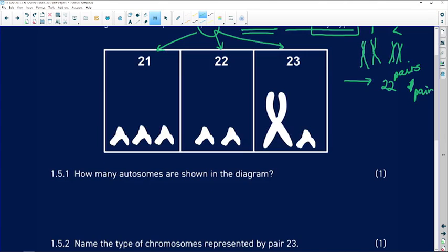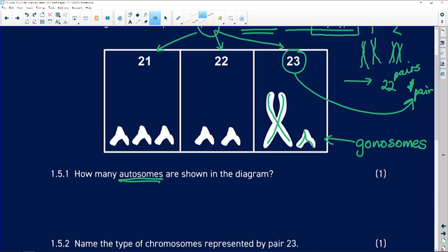How many autosomes are shown in the diagram? Well, pair 23 are the sex chromosomes - you can see the big X chromosome and the smaller Y chromosome. These are gonosomes or sex chromosomes. So how many autosomes do we have? One, two, three, four, five autosomes are shown.